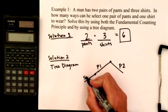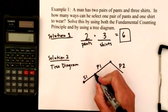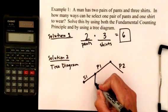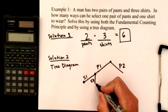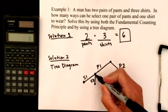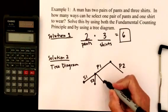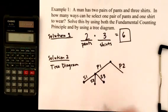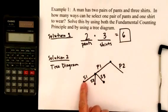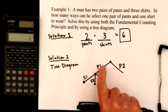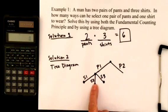Or he could have selected shirt number two. I'll just use S1, S2, and S3 for the shirts. So here I would have pants number one with shirt number one, or pants number one with shirt number two, or pants number one with shirt number three.